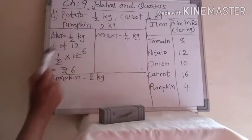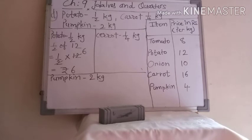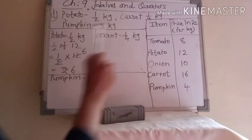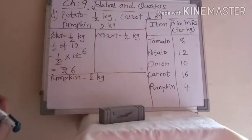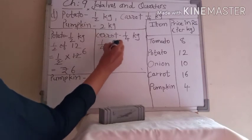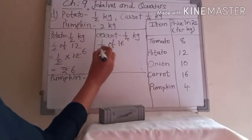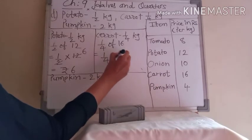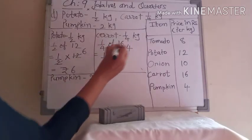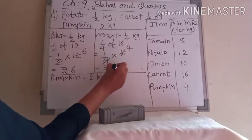Now we solve for carrot — one fourth kg. Logically: carrot 1 kg is 16 rupees. Half of 16 is 8. One fourth means half of the half — half of 8 is 4. Now with the method: 1/4 of 16 equals 1 upon 4 multiply 16. In the 4 table: 4 fours are 16. So price of one fourth kg carrot is rupees 4.